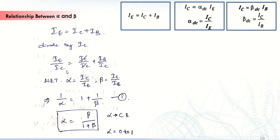So putting these expressions in terms of alpha and beta, it becomes 1 by alpha is equal to 1 plus 1 by beta. Solving this expression for alpha, it becomes alpha is equal to beta divided by 1 plus beta.